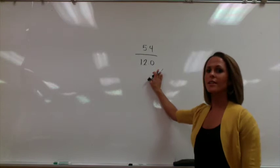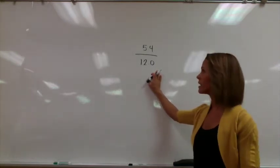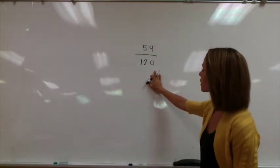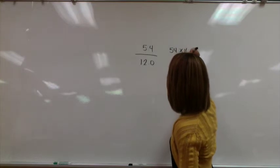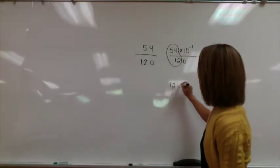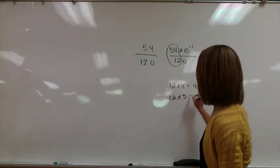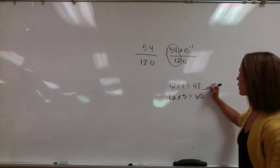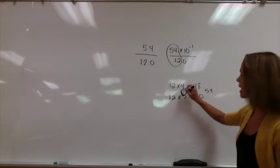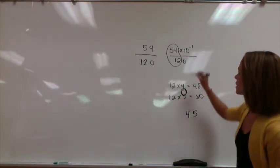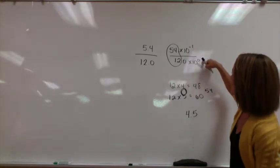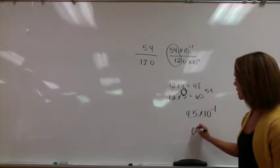Here's another problem for you to try, very similar to the last one. You're going to use that sort of estimation and halfway thought. The answer here: we're going to look at 54 divided by 12. So 54 times 10 to the negative 1st divided by 12.0. We know 12 times 4 is 48, and 12 times 5 is 60. 54 is halfway between both, so the answer must be halfway between 4 and 5 — which means 4.5. Handling the exponent: negative 1 minus 0 is still negative 1. It's 4.5 times 10 to the negative 1st, which gives me .45.